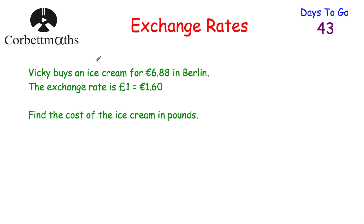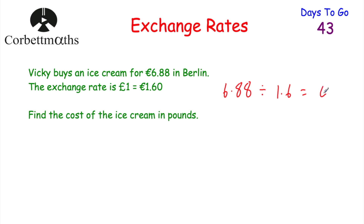Let's have a look at our next question. Vicky buys an ice cream for €6.88 in Berlin, and the exchange rate is £1 = €1.60. Find the cost of the ice cream in pounds. Feel free to press pause and work this out yourself. We know the cost in euros is €6.88, and we want to find the cost in pounds. For every €1.60, that's £1.00. So we divide €6.88 by 1.6, which gives us £4.30. If we know how much it is in euros and we know the exchange rate, we can just divide by the exchange rate number to find the price in pounds.